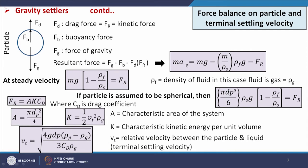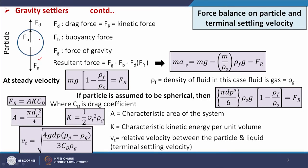Now we will see how the vt expression is derived. Consider a particle that is falling — there is one force fg (gravitational force) working downward. In the upward direction, one force is fb (buoyancy force): when a solid particle falls in a fluid, the same volume of fluid is displaced and it gives a force to the particle in the opposite direction. Another force working on the falling particle is fd (drag force), which acts in the same direction as the buoyancy force, opposite to the gravitational force.